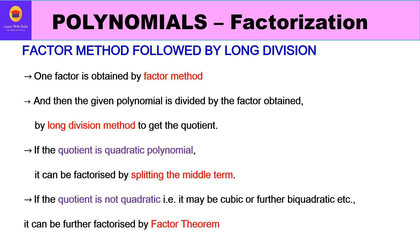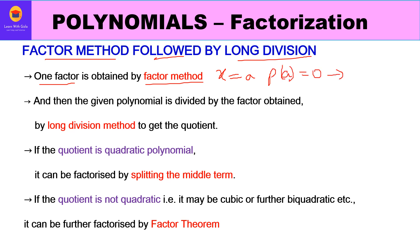Now let us learn the second method: factor method followed by long division. In this method, one factor is obtained by the factor theorem — replacing x by a value a, and if the polynomial equals 0, then x - a is a factor.